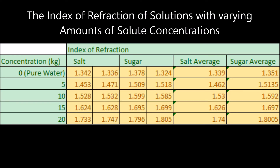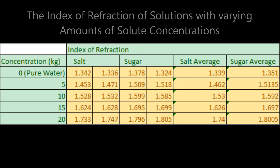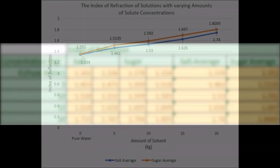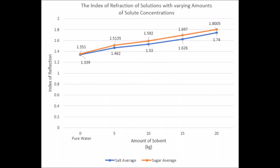This table and graph list all of the indexes of refraction for every single test throughout the experiment. The index of refraction rose exponentially with the second test — the initial adding of the solute — and then consistently rose, with sugar bending the light more than salt did.